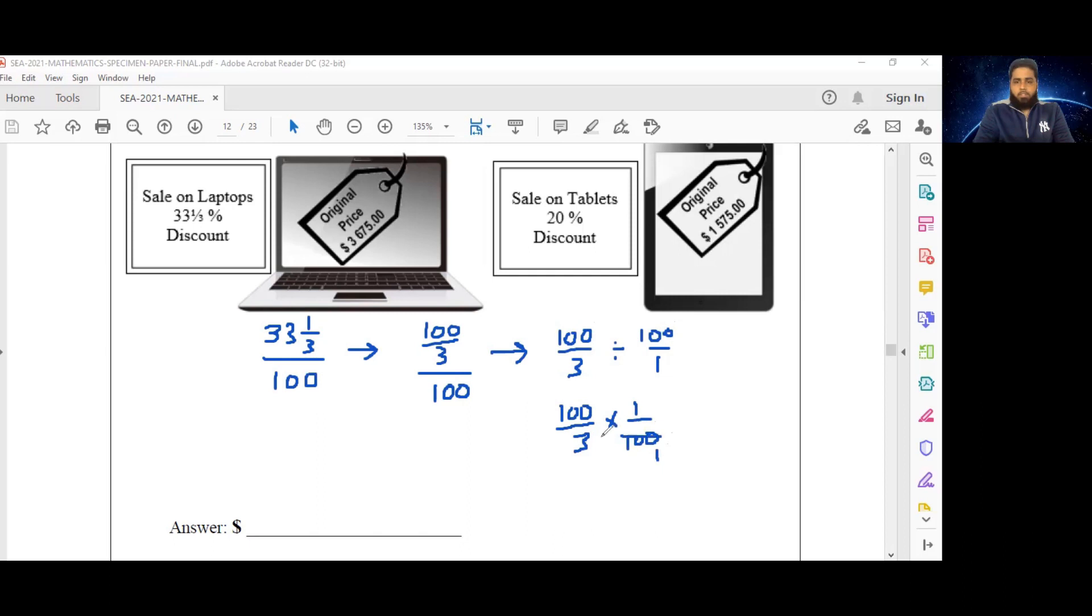When we multiply these, we can cross cancel 100 into 100 is 1, and then we'll end up with one third. So the 33⅓% discount is basically one third of the original price.